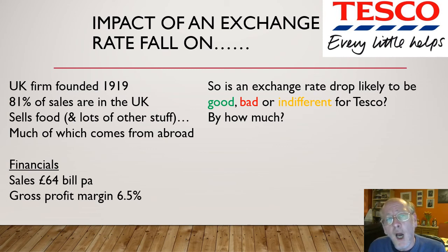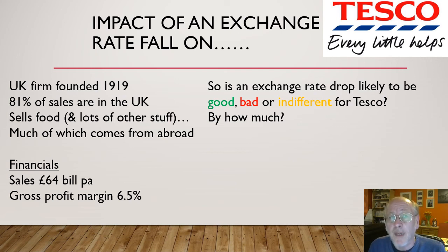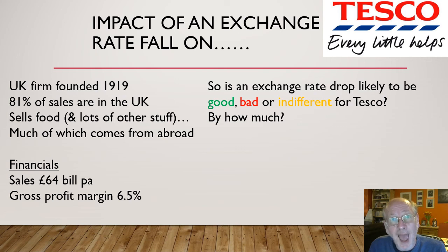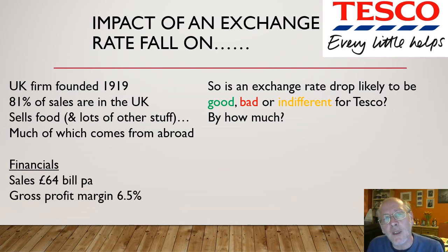Across three case studies: for Nissan, the benefits of a weaker pound far outweigh the costs. For Hotel Chocolat, there will be costs as imports get dearer, but few benefits since only about 2% of their goods are sold abroad — negative but not particularly so. For Tesco, one-fifth of sales take place abroad, but four-fifths don't, and they are not making huge profit margins in the UK. That's where you get your argument, your counterbalance, and your conclusion — showing how the same exchange rate change affects different firms very differently.